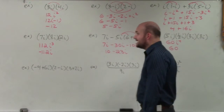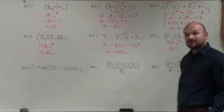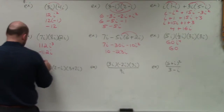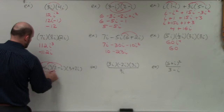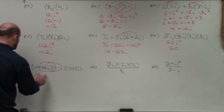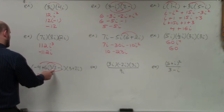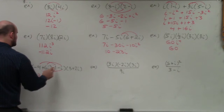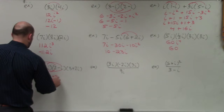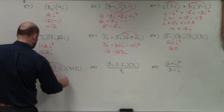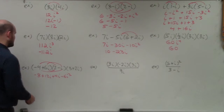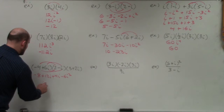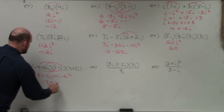Over here we have a binomial times a binomial times a binomial. When doing something like this, basically choose two binomials to multiply first, then work on the next one. So I'll multiply the first two. That gives me negative 8, plus 12i, plus 12i. Negative 4 times negative i gives me positive 4i, and that gives me negative 6i squared. The i squared becomes negative 1, which becomes positive 6. Positive 6 minus 8 gives me negative 2 plus 16i.